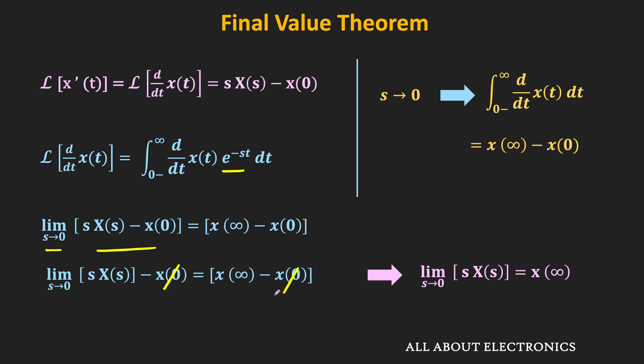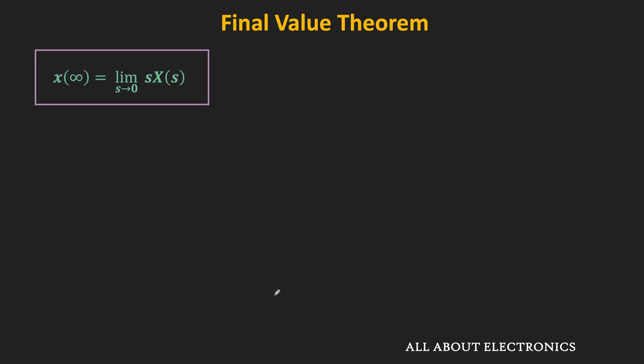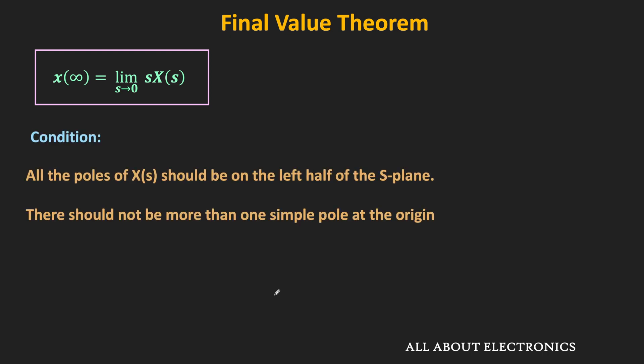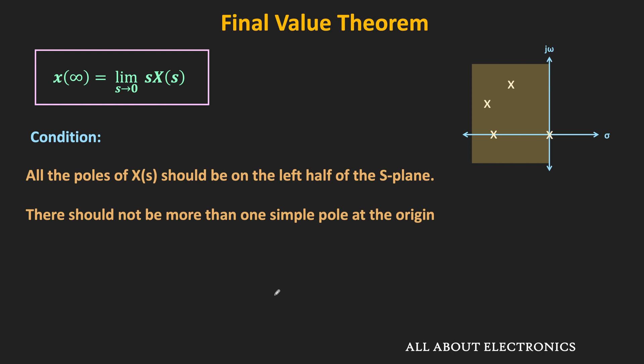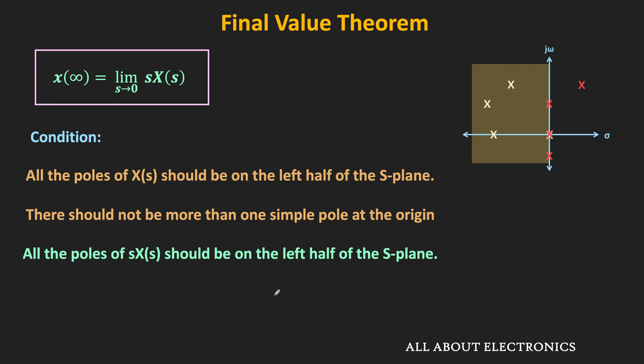To use this final value theorem, the function X(s) must satisfy specific conditions. The first condition is that all poles of s·X(s) must be on the left half of the s-plane. Recall that a pole is the value of s for which X(s) becomes infinity. The poles can be anywhere on the left half of the s-plane, and even at the origin, but there must be no poles on the right-hand side or on the imaginary axis, and no more than one pole at the origin.